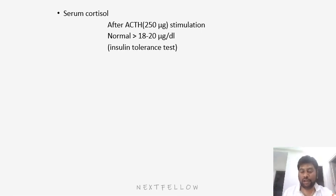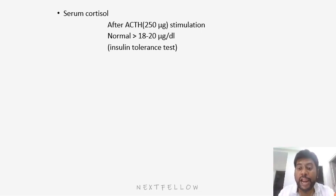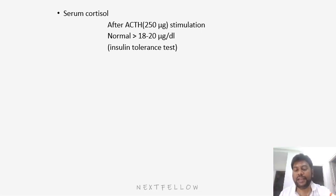Alternatively, you can also go for insulin tolerance test. In a glucose tolerance test, we give glucose and serially measure glucose levels. Here, it is the opposite — we give insulin and then measure the glucose level serially. When you give insulin, glucose levels should decrease. But it will never go to hypoglycemia because of the action of counter-regulatory hormones. Whereas in adrenal insufficiency, since one of the counter-regulatory hormones will not be produced, the patient can go into hypoglycemia. That is how we can confirm the diagnosis of adrenal insufficiency.